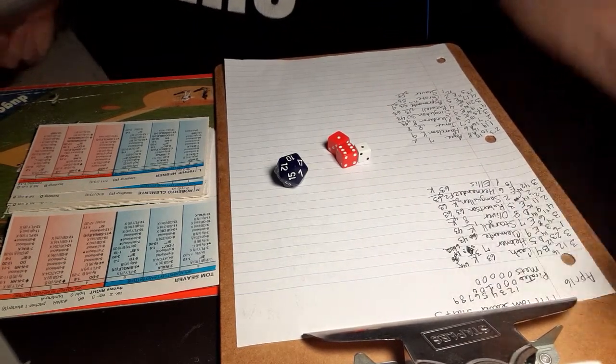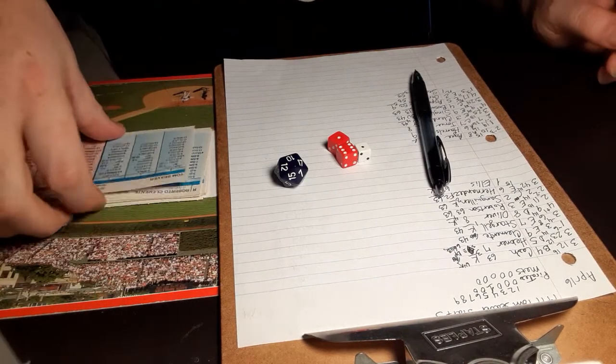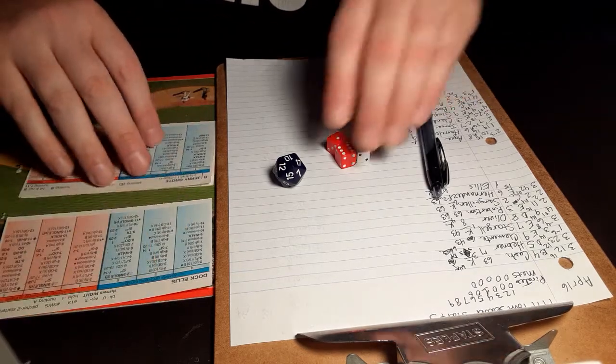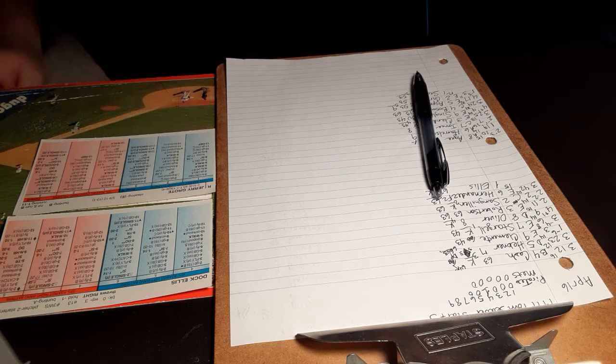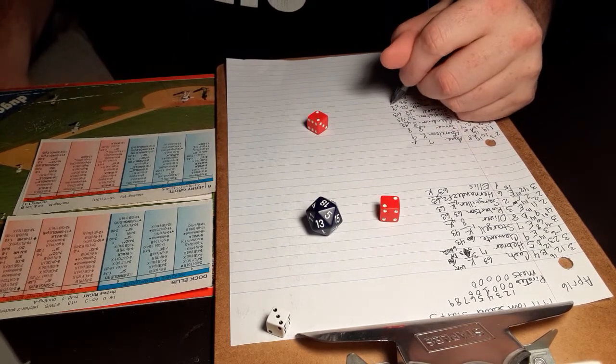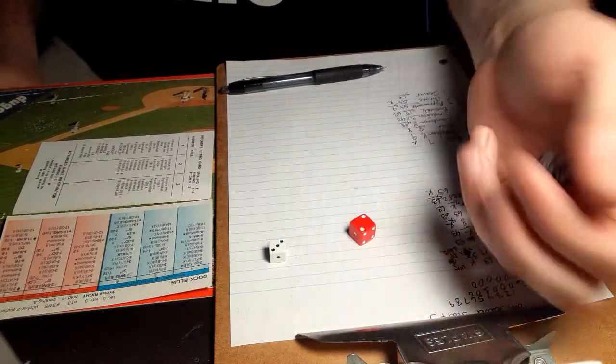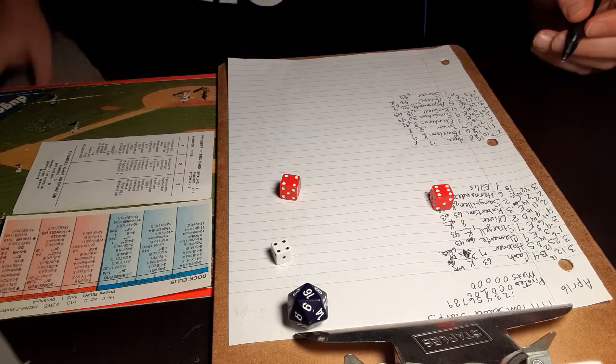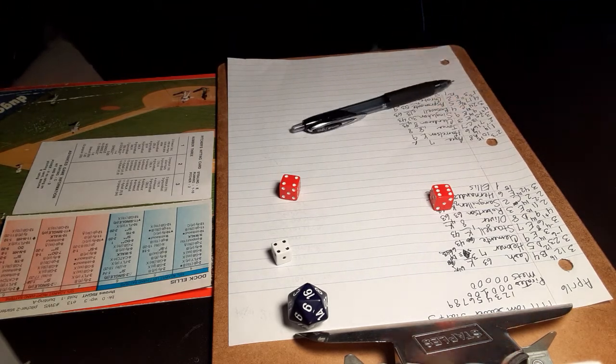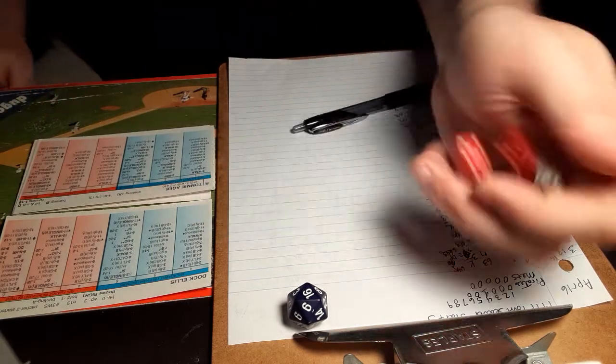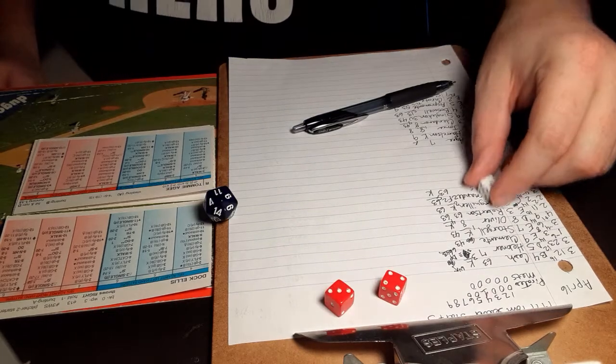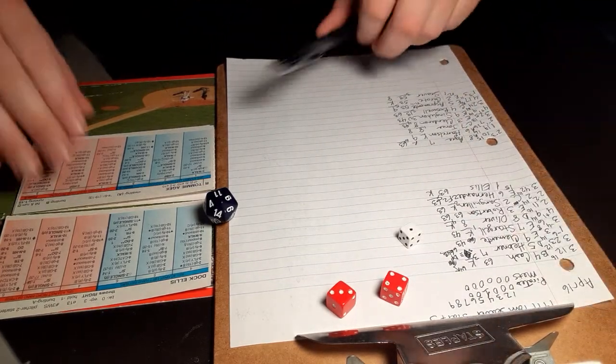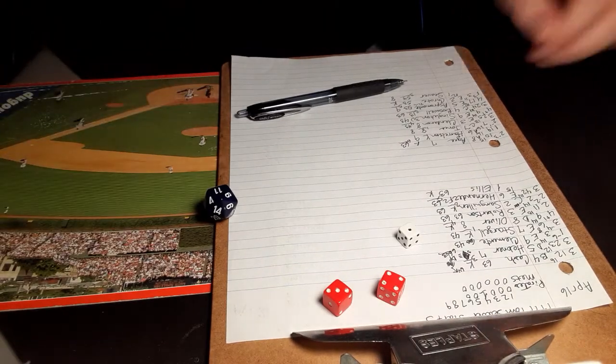So we go to the bottom half of the sixth. Pirates still clinging to a 1-0 lead. And right now, Ellis has the Mets all tied up in knots. Here's Jerry Grody. 3-4, swing and a miss, strike three. And here is Seaver. 4-10 against a righty, that's a fly ball to center field. Oliver races in, makes the play. Here's Tommy Agee. 1-7, ground ball to short, and that will retire the side. So Ellis through six, and we go to the seventh. 1-0 Pirates.